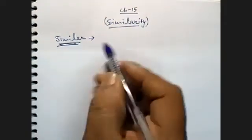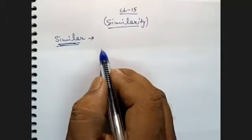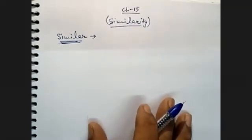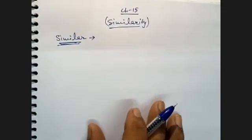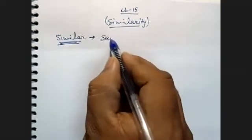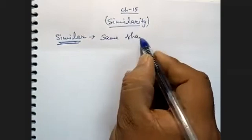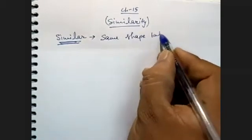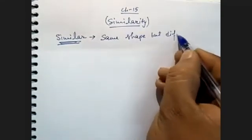The teacher asks Kushi to define similar. Kushi responds: two things which look similar but are not the same size and shape — same shape but different size. The teacher confirms: same shape, different size — that is our definition of similar.